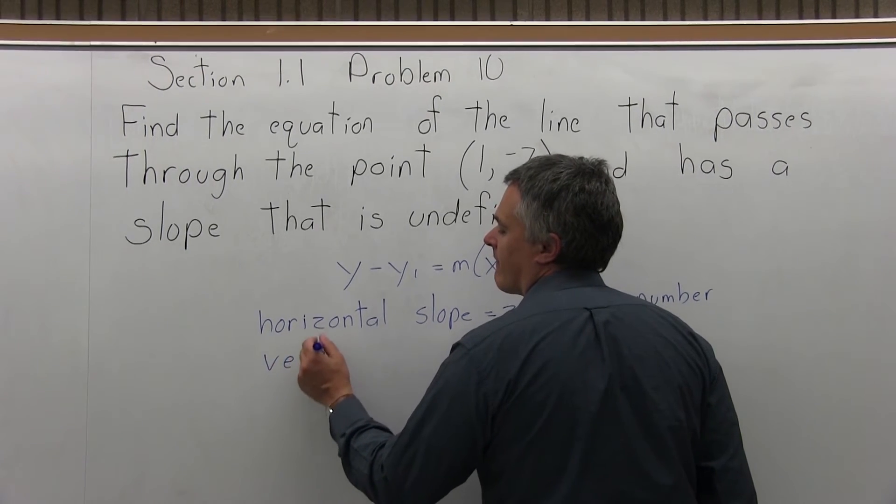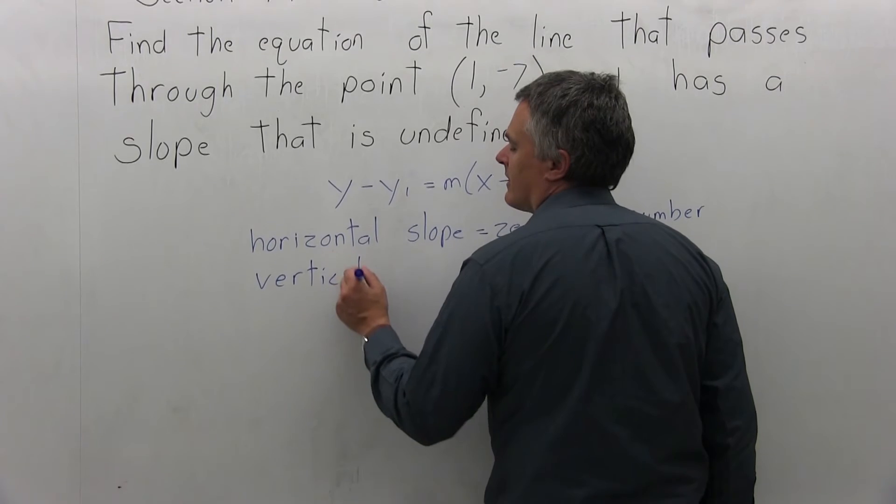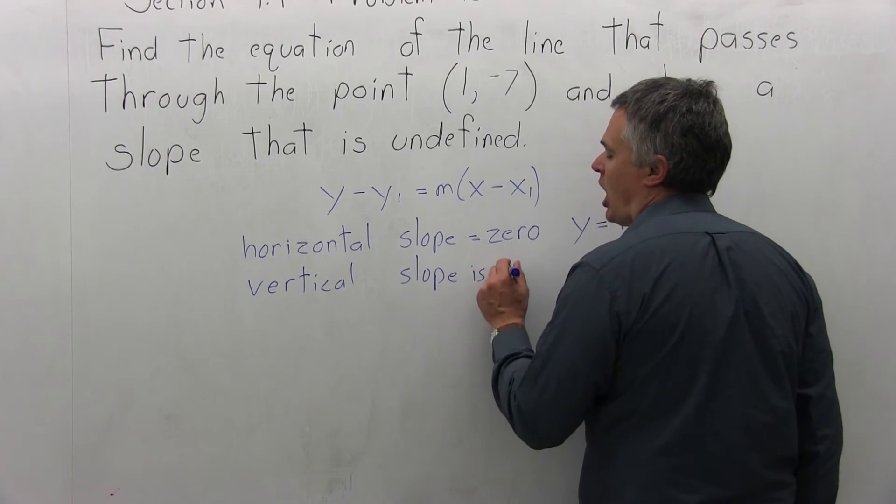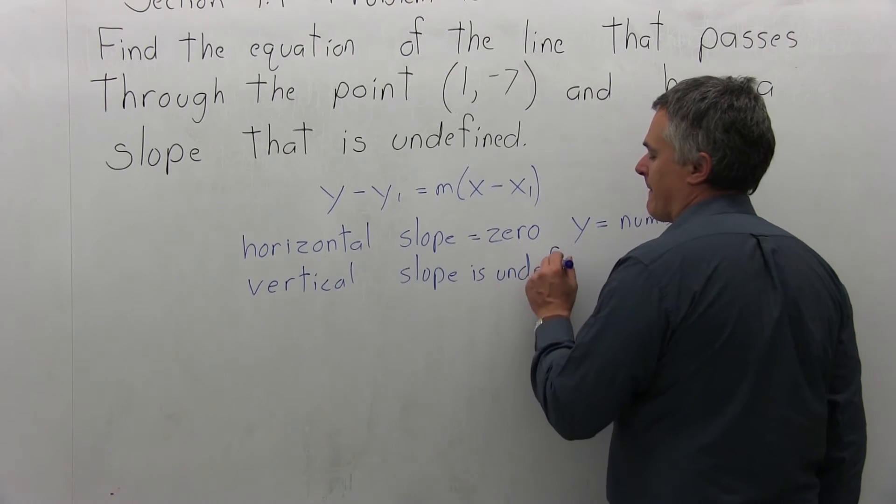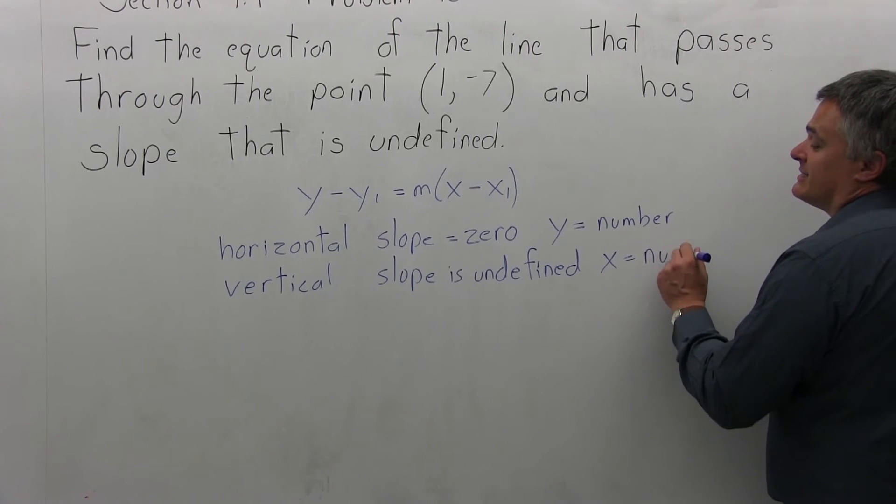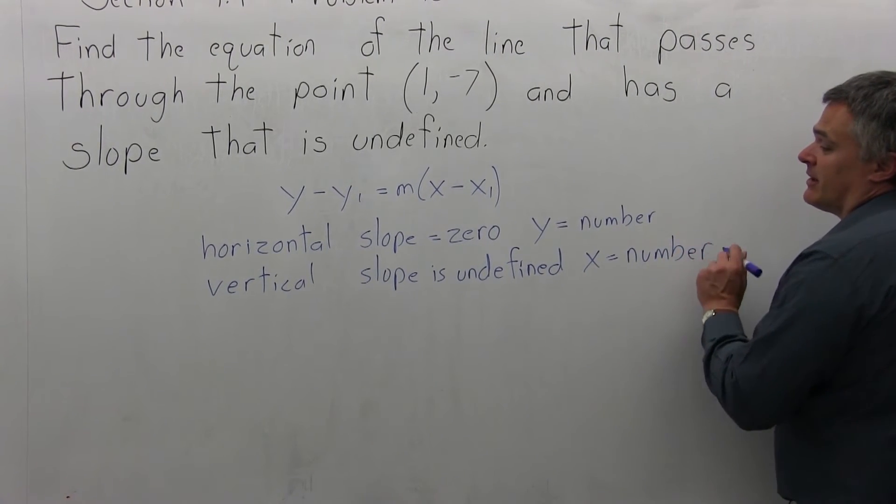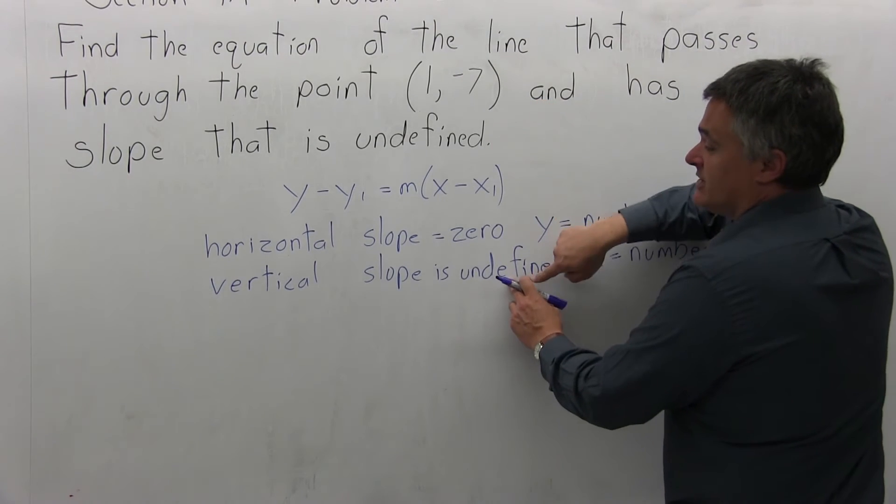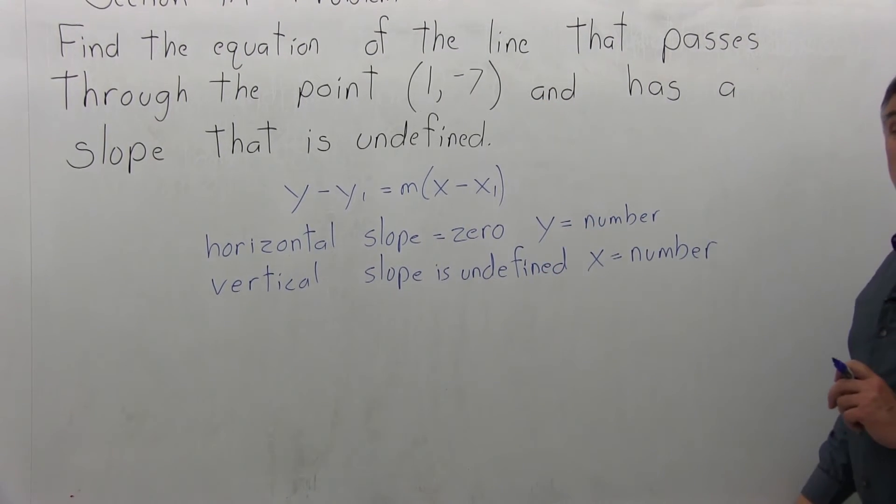And vertical is slope is undefined, and the form for all vertical lines is x equals a number. Well, the problem says the slope is undefined. So this is the case we have. It is a vertical line.